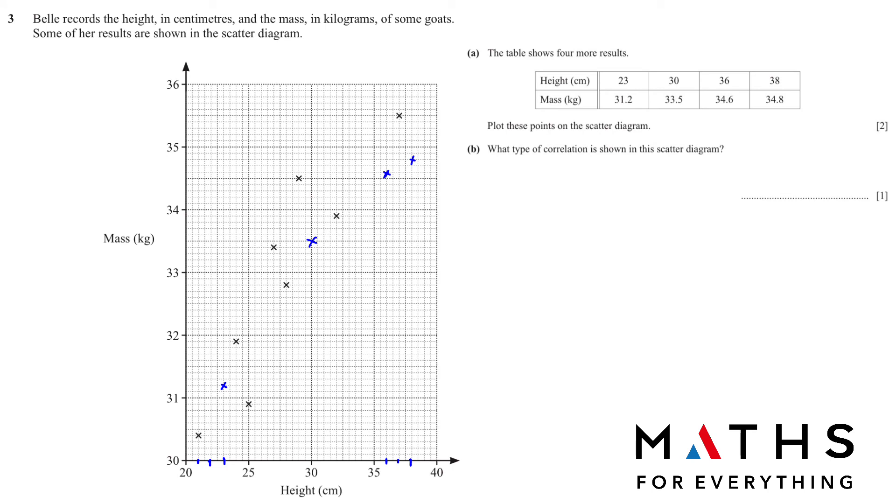What type of correlation is shown in this scatter diagram? All the points are going upward, so it is a positive correlation. If the points were going downwards, like if they were this way, then that will be negative correlation. And if they were just scattered around everywhere, maybe a few points are here and here like that, that is no correlation.